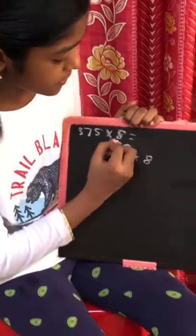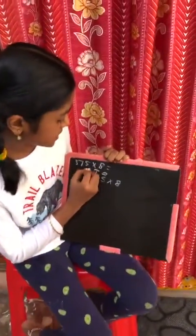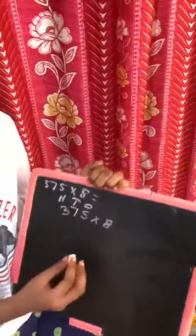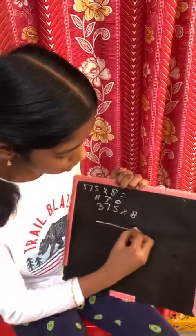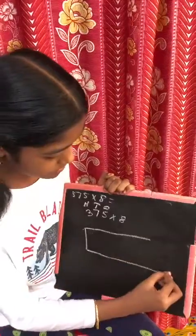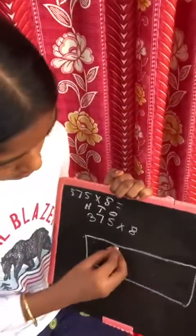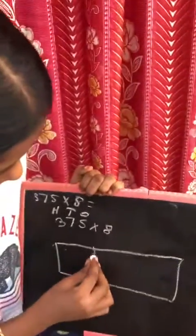5 is in the 1's place, 7 is in the 10's place, and 3 is in the 100's place. Then draw a rectangle like this and divide it into 3 parts because there are 3 numbers and you will be multiplying every number into 8.